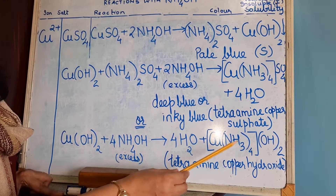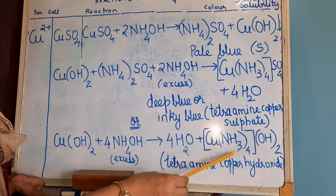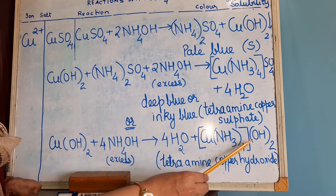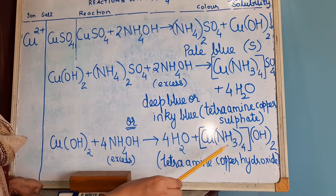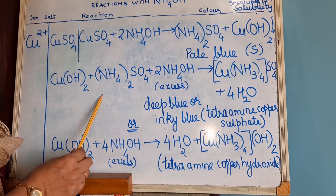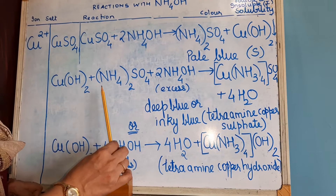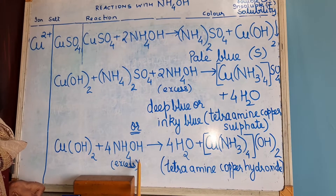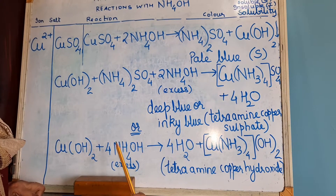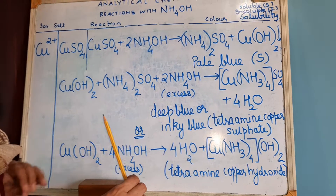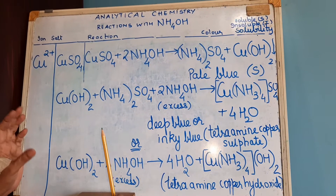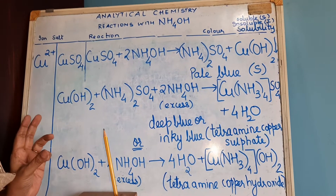Then you will get again a complex salt which is tetraamine copper hydroxide complex. Again the colour of this is deep blue or inky blue. Either you can write this reaction when excess is asked, or you can write the other reaction. You can remember either of the reactions, but in your textbook and in the PDF both reactions are explained, so you have to understand the difference between the two.